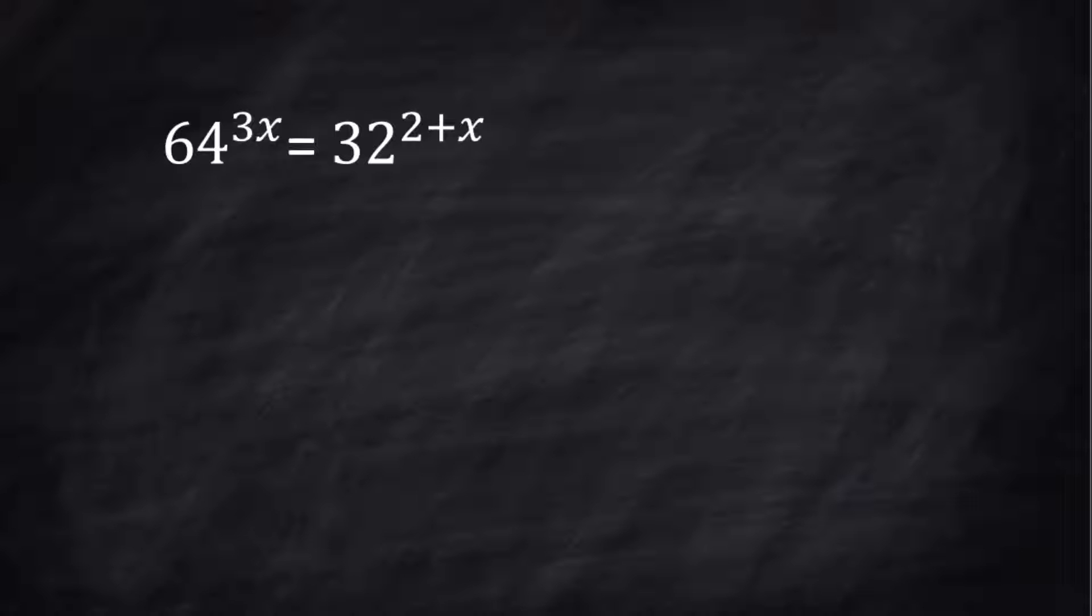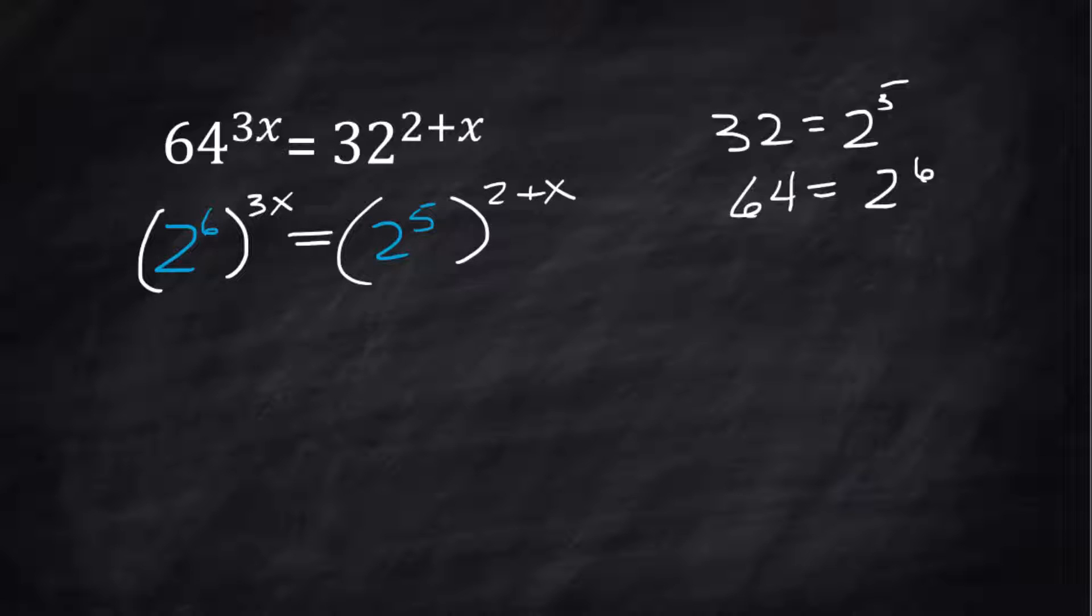In this one, you don't see the 2, but both 64 and 32 can be written as bases of 2 with an exponent. 32 is 2^5, 64 is 2^6. So we're going to rewrite those. 64 is 2^6 and 32 is 2^5.